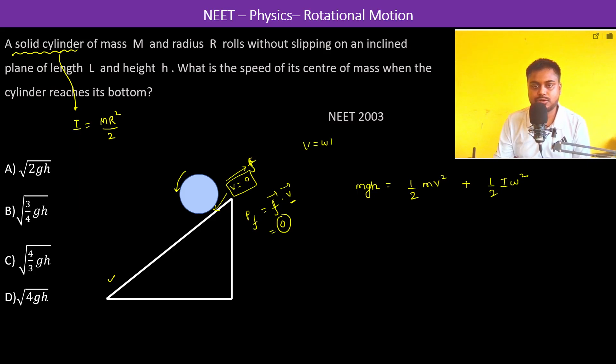Now, of course, we know V is equal to omega r in pure rolling.